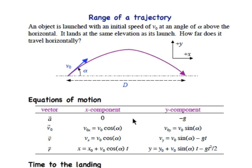You know our acceleration is 0 in the x direction and minus g in the y direction. The initial x component of velocity is v0 cosine alpha. The initial y component of velocity is v0 sine alpha. So the velocity at any time t in the x direction is just the same, v0 cosine alpha, and in the y direction is v0 sine alpha minus gt.